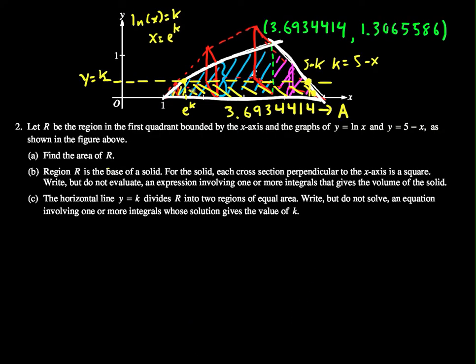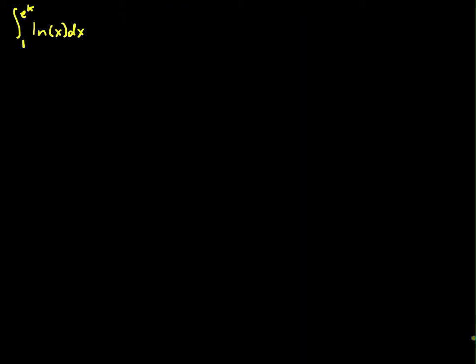Okay, second area goes from e to the k to 5 minus k. And that's going to be plus the integral from e to the k to 5 minus k. And that function is the horizontal line, y equals k. So just have that be k dx.